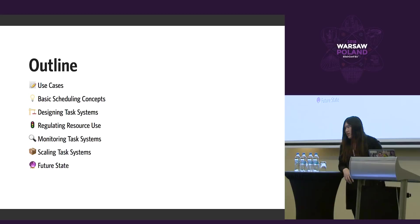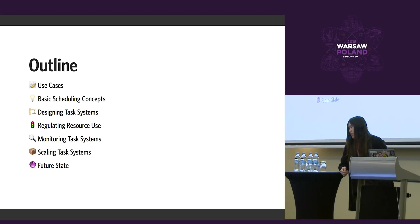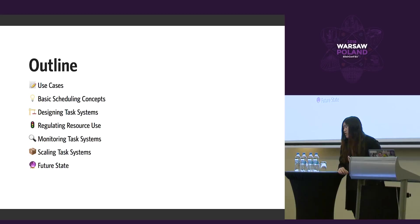Then I'll spend some time talking about basic scheduling concepts that may help you analyze tasks and other workloads in your system before deciding to build a queue, because depending on the type of task in your system, the design of the queues may need to be very different, or it may not need to be a queue at all. After that, we'll talk about designing such a system using Elixir. Then I'll talk about regulating usage of certain resources that are easily exhaustible in your system.